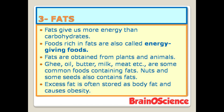The third nutrient is fats. Fat gives us more energy than carbohydrates, but the body has more difficulty digesting fat. Food rich in fats is also called energy-giving food. Fats are obtained from both plants and animals. Ghee, oil, butter, milk, meat, nuts, and some seeds are common fat-containing foods. Excess fat is often stored as body fat and causes obesity, which is very harmful.